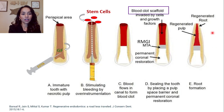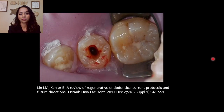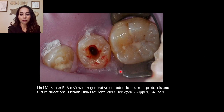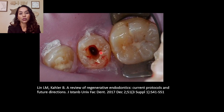The end goal is to regenerate the pulp and the root. This image from a 2017 paper by Dr. Lewis Lin and colleagues highlights that when you induce apical bleeding, you want it to reach the level of the CEJ.